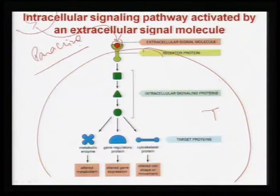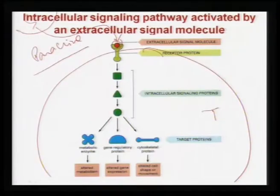Autocrine means same cell. Paracrine means through extracellular matrix, and endocrine means through blood stream — auto, para, endo. This is a paracrine signal; it comes and is actually being attached to the receptor protein.